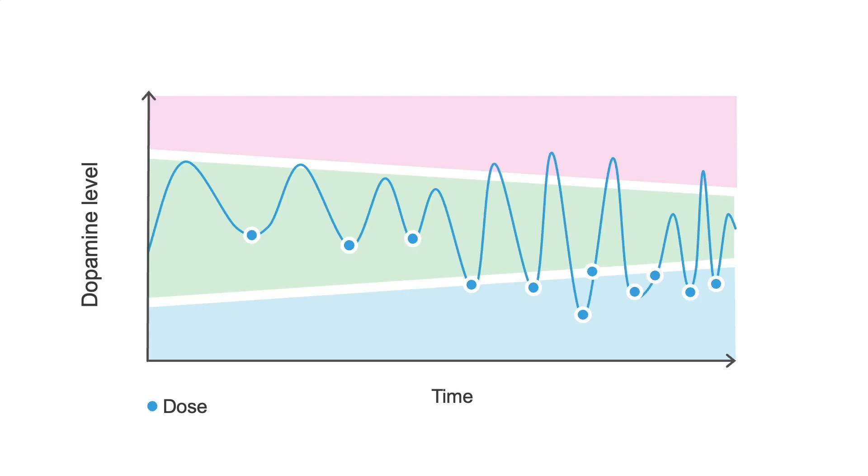Here's a graph showing the effectiveness of levodopa over time from early stage to advanced Parkinson's disease, with the dopamine level on the y-axis and time on the x-axis.